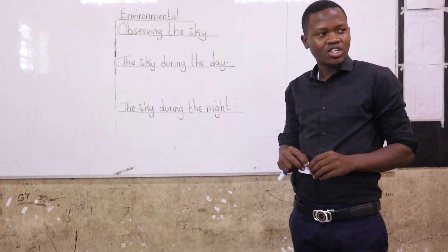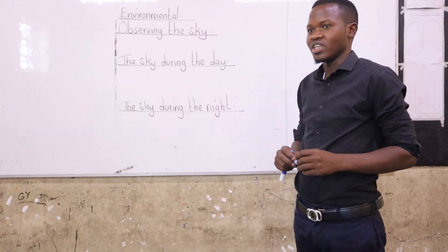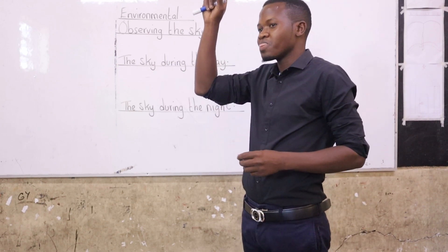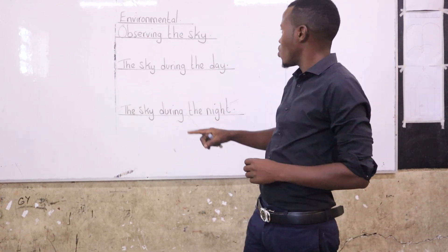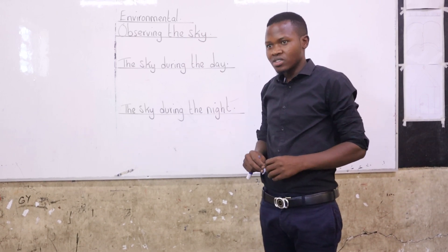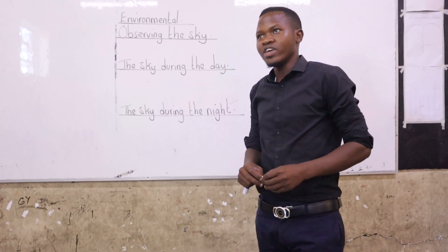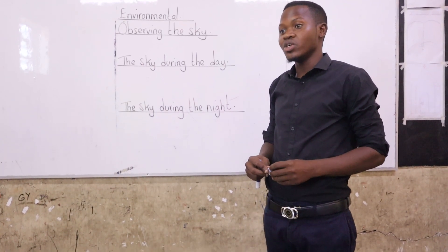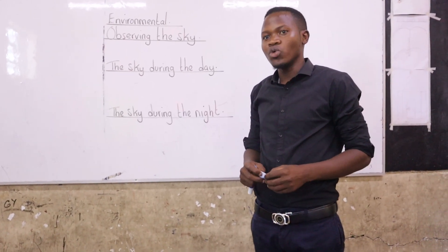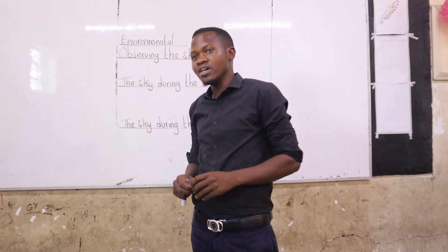Now in that song, there are things that you have mentioned. I've heard you mentioning the star. The star is found up there in the sky. So today we are going to learn about the sky. I want you to sit up right and listen. If you look at the sky during the day, when the sky is clear, it is blue in color.